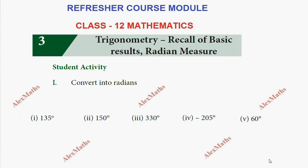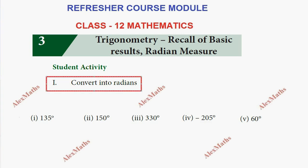Hi students, this is Alex. In this video we have a refresher on classical mathematics, Chapter 3. The student activity problem — we will solve the first part: convert into radians. So the basic formula for converting degrees to radians — the radian measure is obtained from the degree measure.